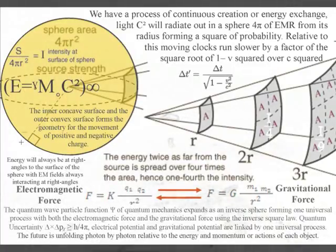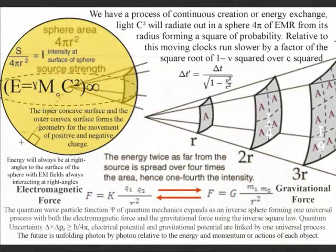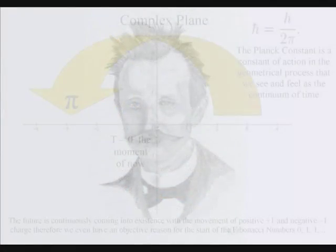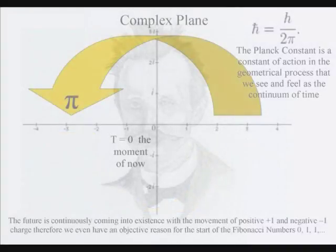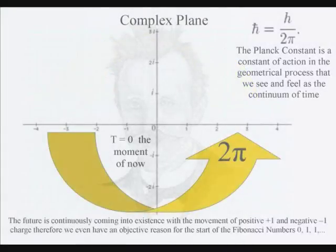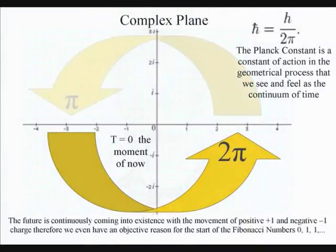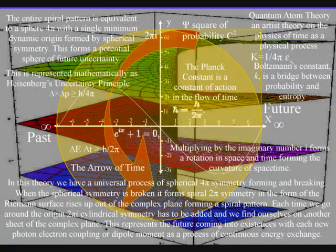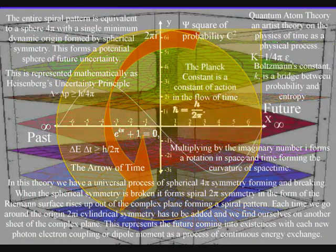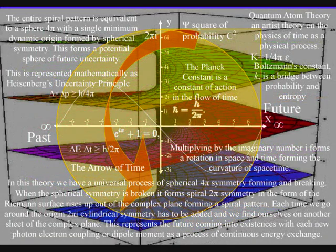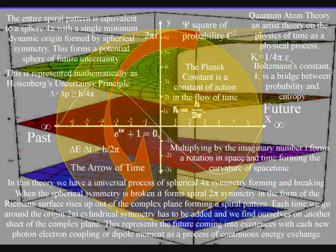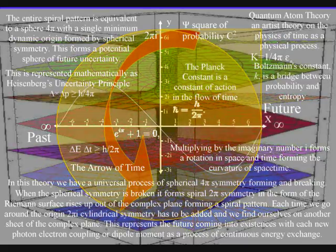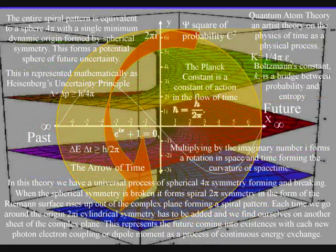This represents a dynamic three-dimensional process that starts at the smallest scale, with the Planck constant being a constant of action in the dynamic geometrical process that we see and feel as the passage of time, and with Heisenberg's uncertainty principle representing the uncertainty of everyday life at the smallest scale of the creative process.